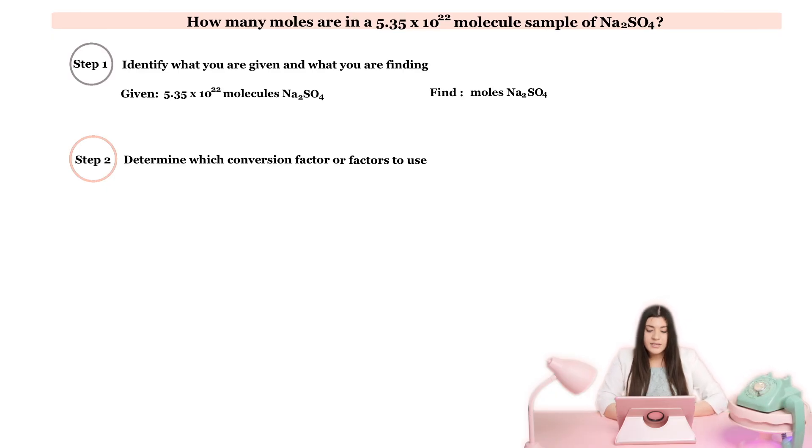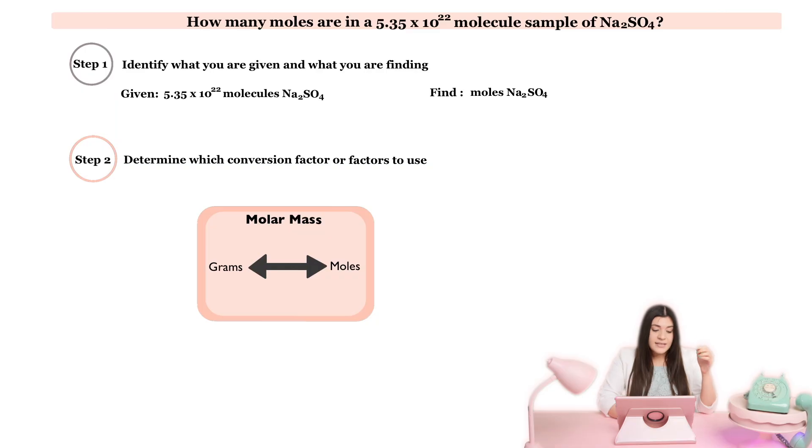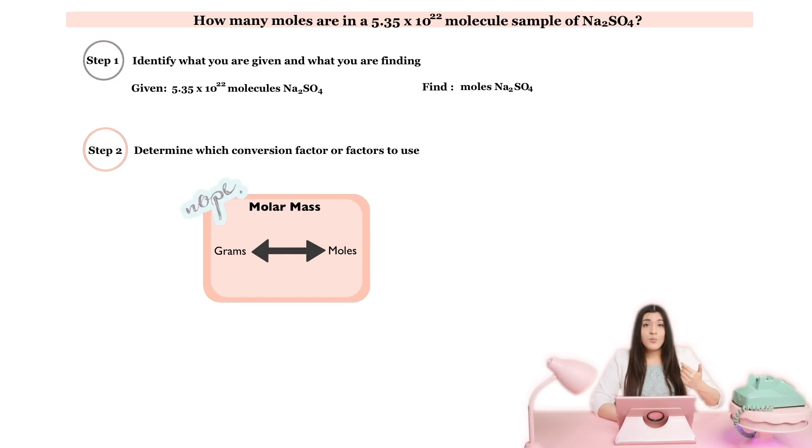So the first common one is known as molar mass. What molar mass allows you to do is it allows you to go from grams to moles or opposite way from moles to grams. Looking at this question, we're not given grams whatsoever, so there's no need to convert anything to grams. So this one is out. We're not using molar mass overall.